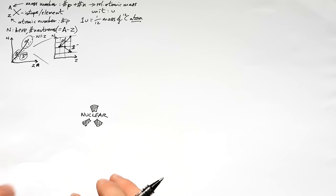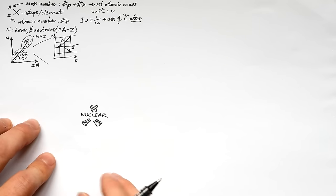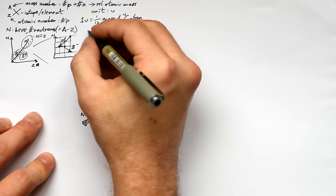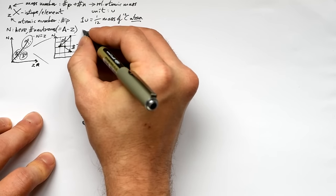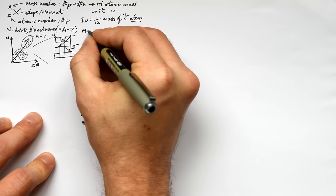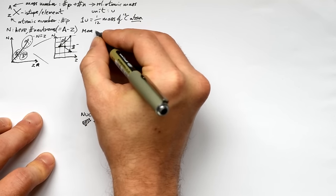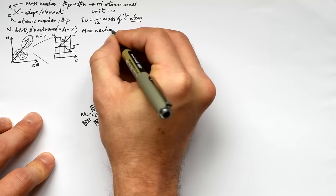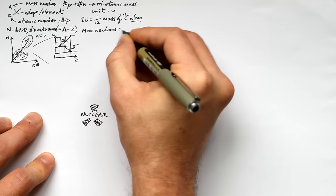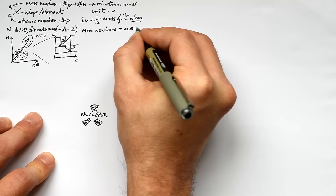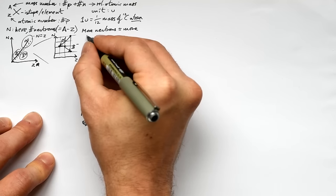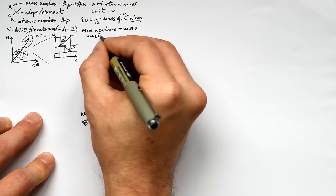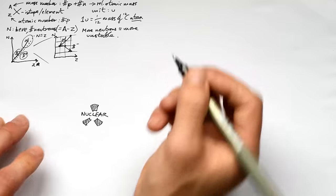On a zoomed-in section of the N-Z graph: alpha decay moves down two in both N and Z directions. Beta-minus — a neutron turns into a proton — so it goes down in N and right in Z. Sometimes you may see A on the y-axis instead of N, so adjust your thinking accordingly. The more neutrons something has, the more unstable and more likely it is to decay.